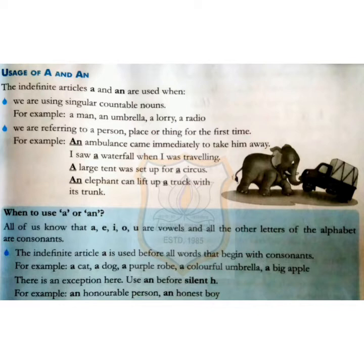Now children, you know that A, E, I, O, U are vowels and all the other letters of the alphabet are consonants. The indefinite article 'a' is used before all words that begin with consonants. For example: a cat, a dog, a pupil, a robe, a colorful umbrella, a big apple.